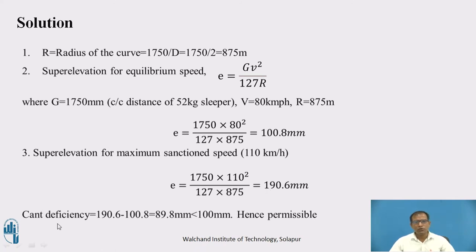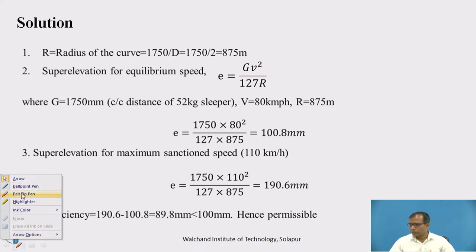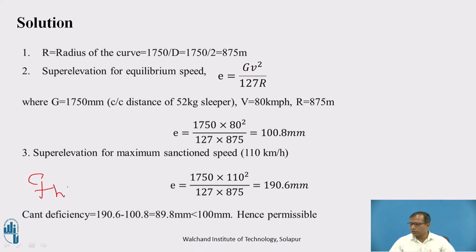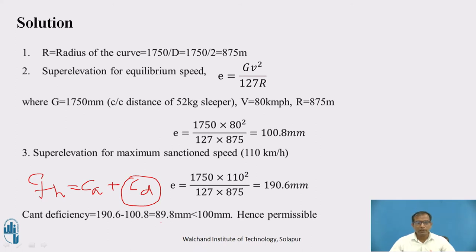For cant efficiency, E theoretical equals actual cant CA plus cant efficiency CD. So CD equals E theoretical minus actual cant, which gives 89.8 mm. Since the maximum allowable cant efficiency is 100 mm and 89.8 mm is less than that, it is permissible.